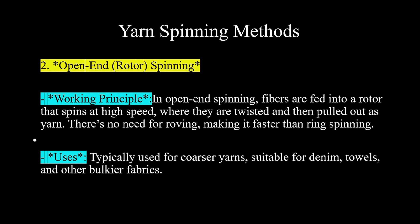Second is open-end spinning, also a commonly used spinning method for manufacturing of yarn. In open-end spinning, fibers are fed into a rotor that spins at high speed, where they are twisted and then pulled out as yarn. There is no need for roving, making it faster than ring spinning. The simplex machine process — the flyer machine process — is skipped in this method, going directly from drawing to the rotor.